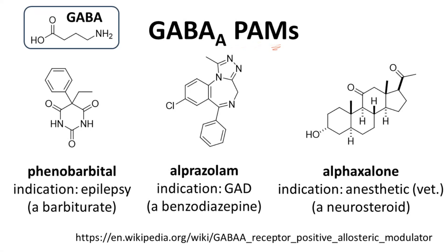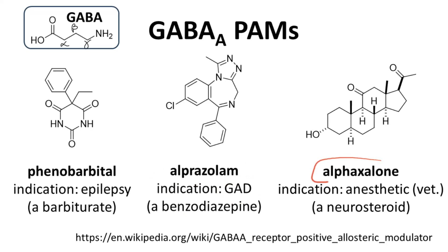Positive allosteric modulation of GABA-A is not a new idea; other drugs with the same mechanism of action are known. In the upper left corner is GABA, gamma-aminobutyric acid, the endogenous ligand of the GABA-A receptor. Phenobarbital, a barbiturate, is a GABA-A positive allosteric modulator used to treat epilepsy. Alprazolam is a member of the benzodiazepine class and treats generalized anxiety disorder. On the right is alfaxilone, which is a veterinary anesthetic and a member of the neurosteroid class. Xeranilone also shares the steroid scaffold and is a neurosteroid.